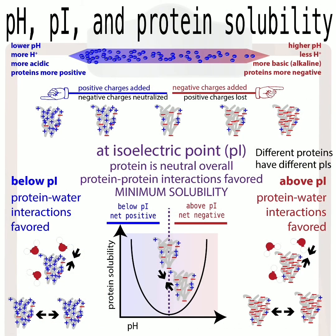pH is really important for protein crystallography. pH is how acidic or basic a solution is — the more acidic, the more protons available for the protein to bind onto. Protons are positively charged, and certain amino acids can take on those protons and become positively charged at low pH, adding positive charge or neutralizing negative charges. At higher pH — a more basic or alkaline solution — you lose protons from the protein, so the protein gets more negatively charged and you lose positive charges.